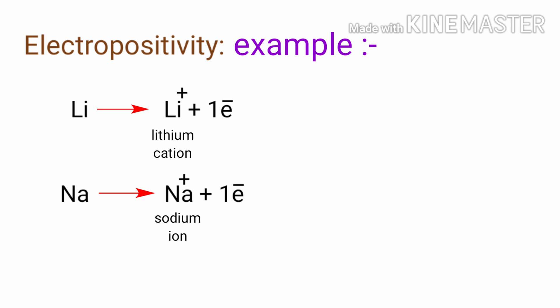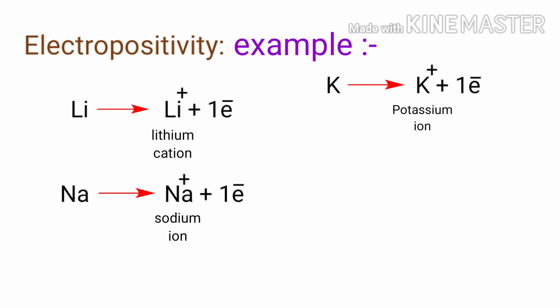Sodium has one valence electron; it tends to lose one electron and form a sodium ion. Potassium has one valence electron; it tends to lose one electron and form a potassium ion.